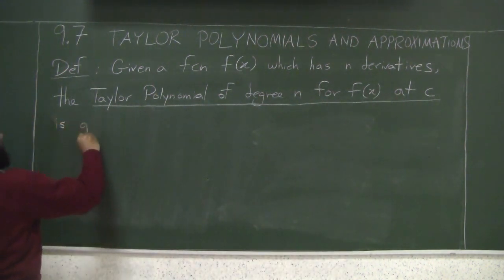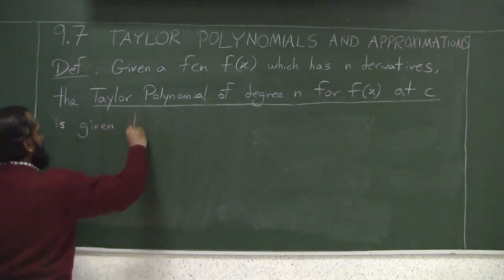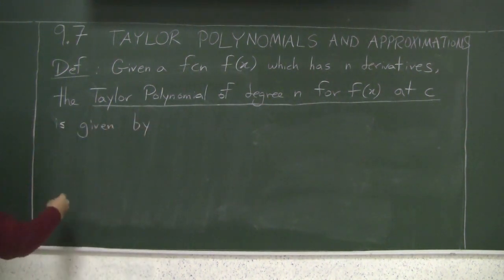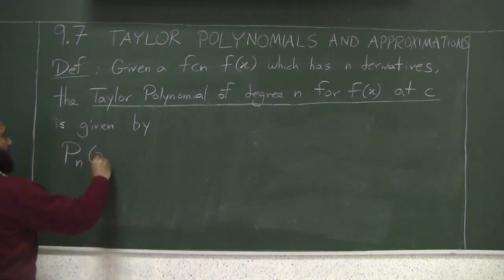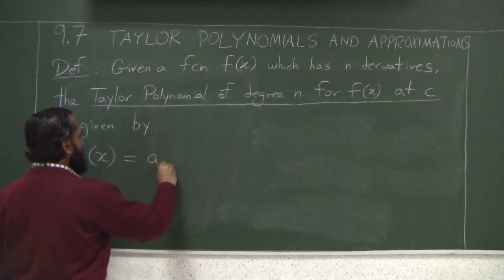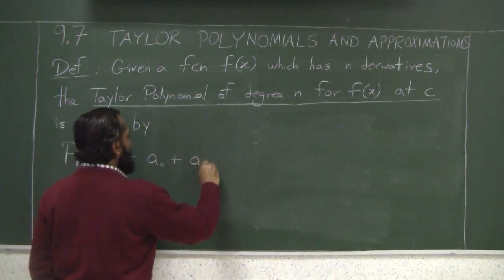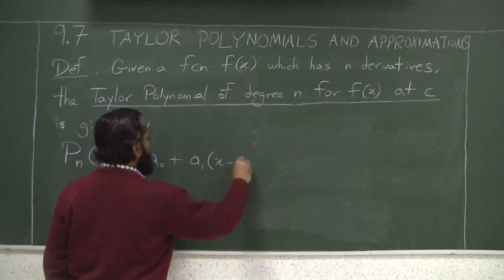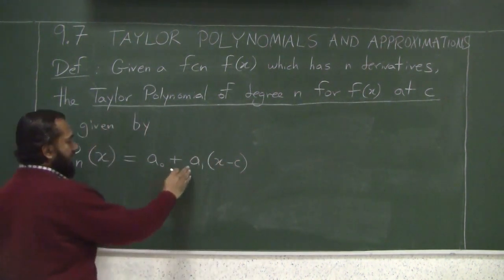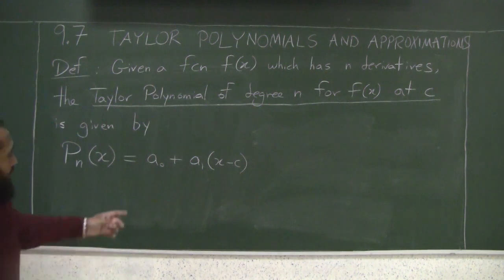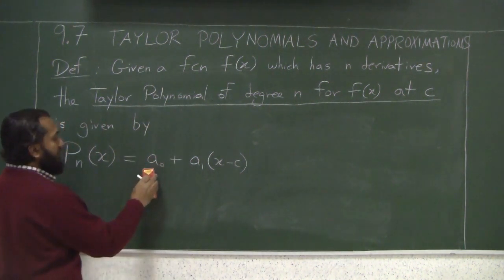is given by - right? You should expect what I'm writing now. This is P_n, what was it? It was a_0 plus a_1 times (x minus c).